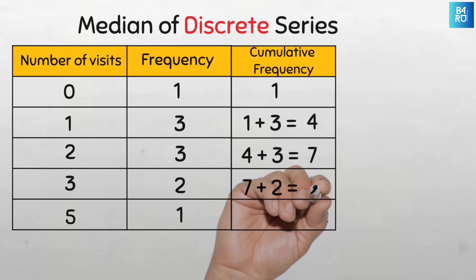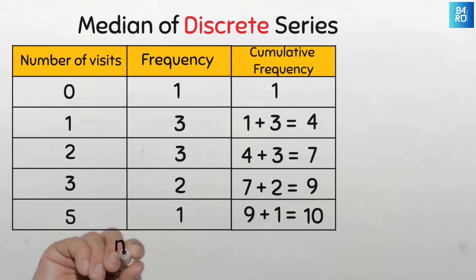To confirm if your cumulative frequency calculation is correct, the last cumulative frequency should be the total of all the frequencies. So we can see here it is 10, and here too we have 10. When we add all the frequencies, we confirm the information that we have in the question that says we have 10 children, so our n is 10.